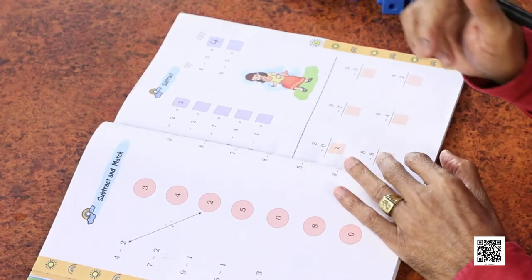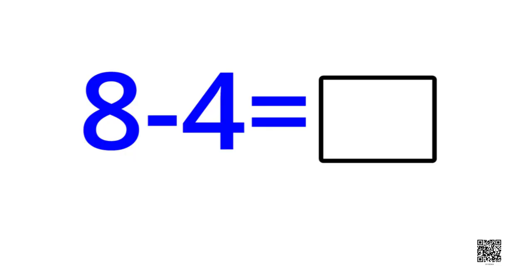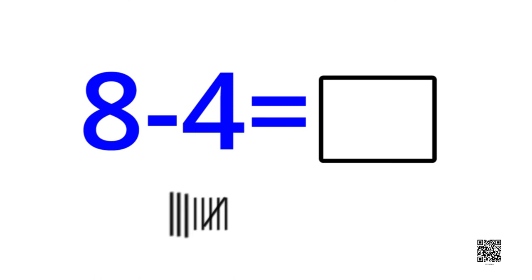Let me show you 8 minus 4 using tally marks. Draw 8 lines: 1, 2, 3, 4, 5, 6, 7 and 8. Out of 8, cross out 4 — 1, 2, 3, 4. Count what is left: 1, 2, 3, 4. So 8 minus 4 equals 4.